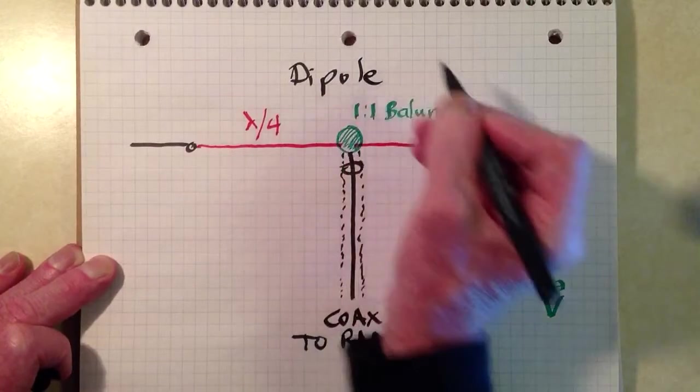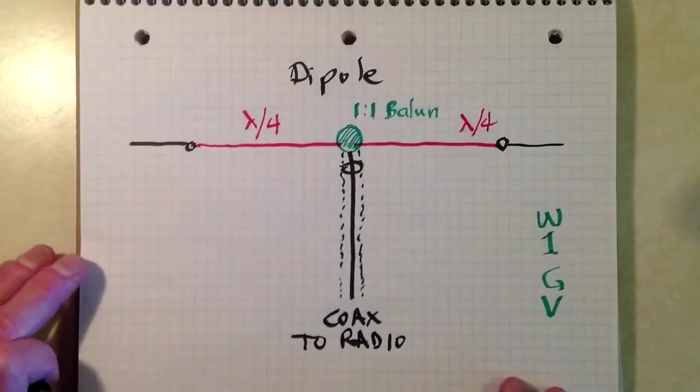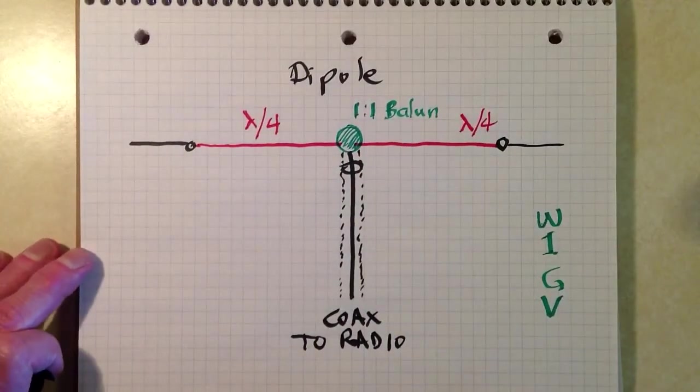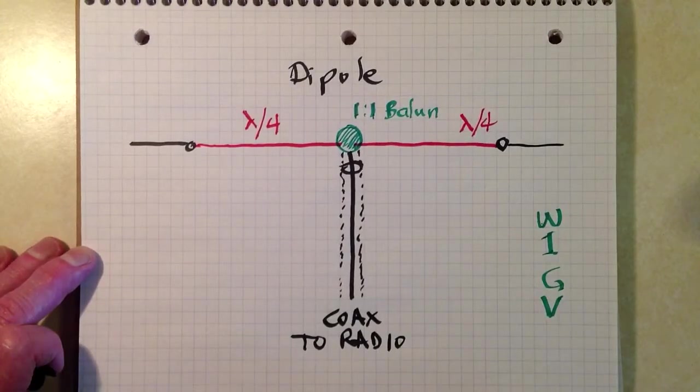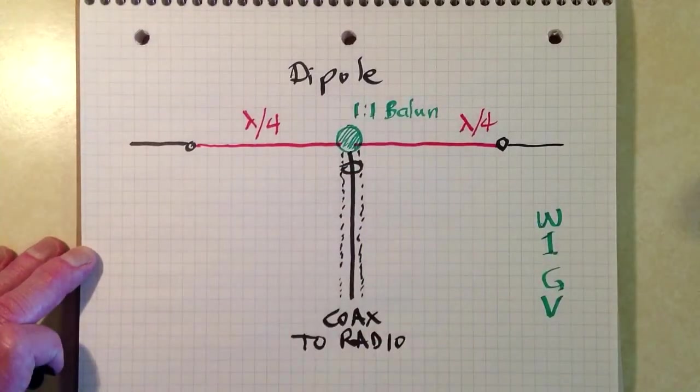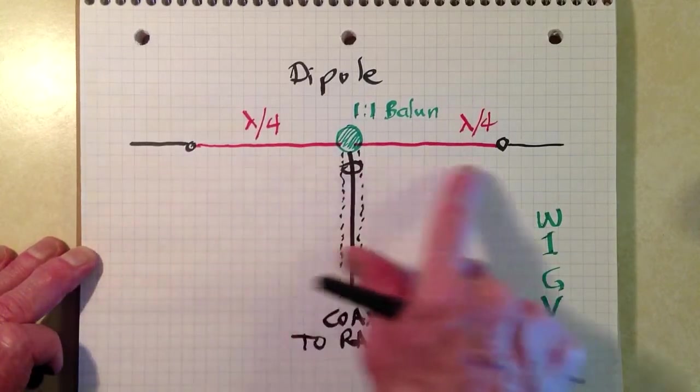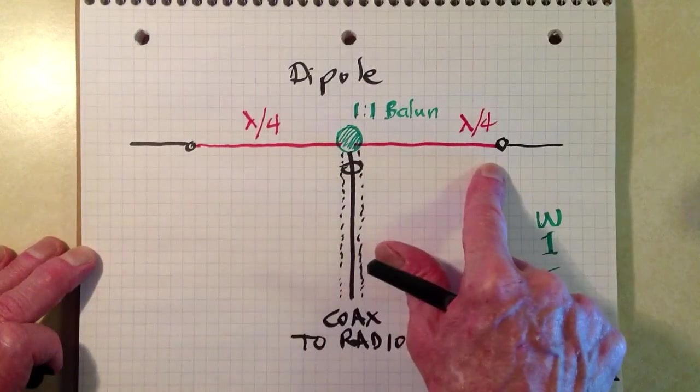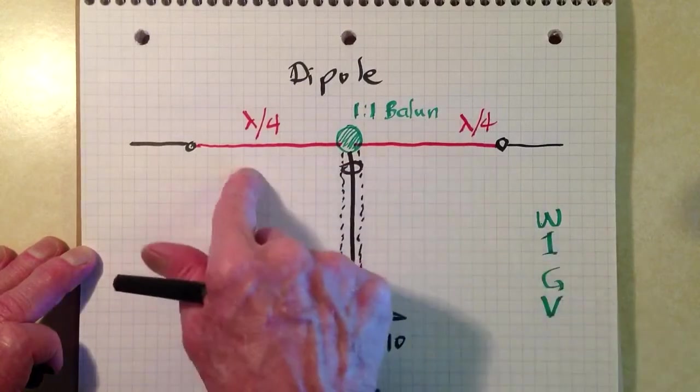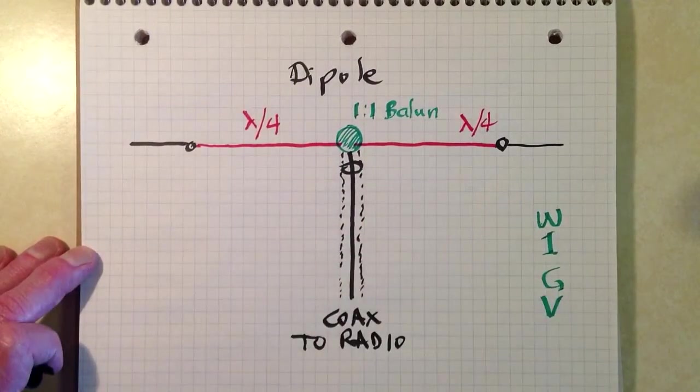That's the antenna I started with and it's a commonly used antenna to this day for amateur radio operators. What I'm showing here is just a generic diagram of a half wavelength dipole. That means half wave from end to end electrically, one quarter of a wavelength on each side.